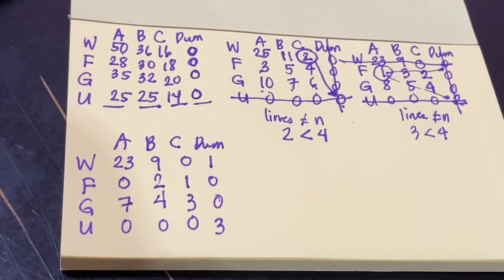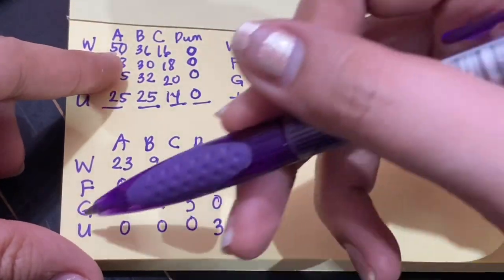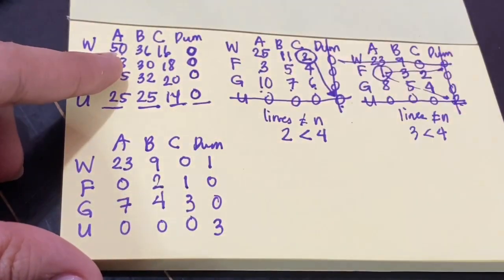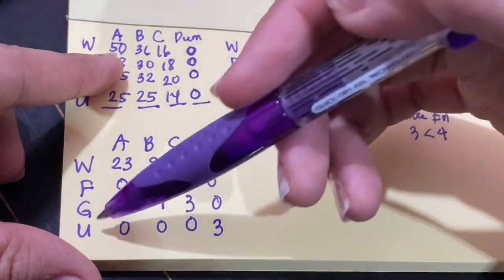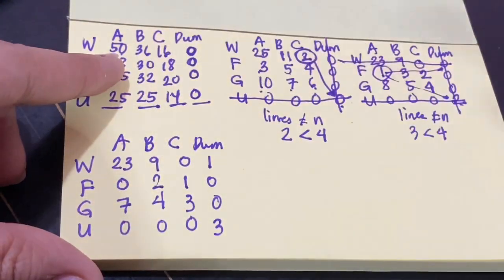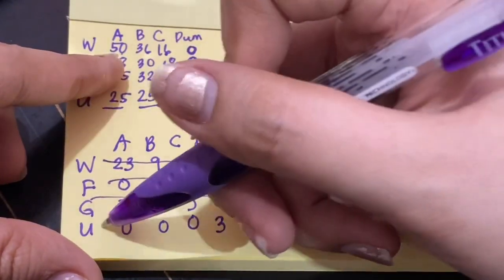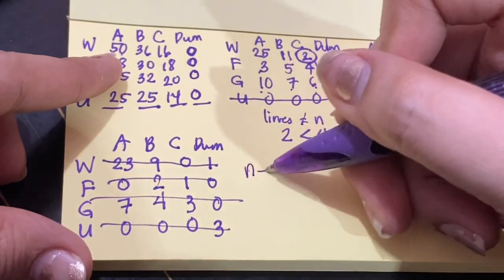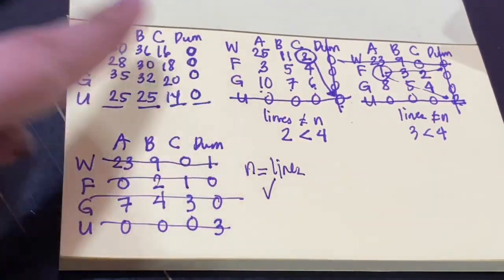We go back and create the minimum number of lines to cover all zeros again. This time, regardless of how we draw the lines — one, two, three, four — the count is always four and is equal to n. Therefore, this is now the optimal tableau.